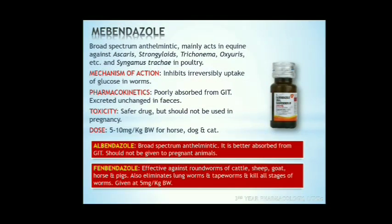Next is mebendazole. Mebendazole is a yellowish powder, broad-spectrum anthelmintic. It mainly acts in equines against ascaris, strongyloides, Trichonema, oxyuris, etc. In poultry it acts against Syngamus trachea. It inhibits irreversibly the uptake of glucose and worms die due to starvation. It is poorly absorbed from the GI tract and excreted unchanged in feces. It is a safer drug but should not be used in pregnancy. Dose for horse, dog, and cat: 5-10 mg/kg. Albendazole and fenbendazole are some other drugs from the benzimidazole group. Albendazole is a broad-spectrum anthelmintic and better absorbed from GI tract; should not be given to pregnant animals. Fenbendazole is effective against roundworms of cattle, sheep, goat, horse, and pigs. It also eliminates lungworms and tapeworms and kills all stages of worms at 5 mg/kg body weight.